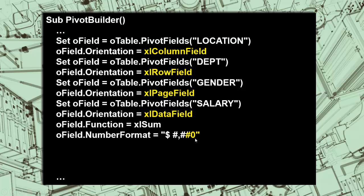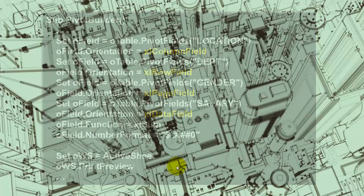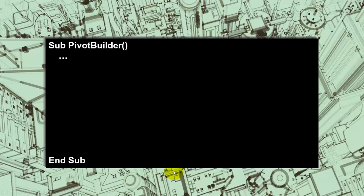We determine which function to use — I decided on Excel Sum, but any other option is possible — and a number format with no decimals. Then we set OWS to the active sheet we are on, and we create a print preview just so we have some evidence.